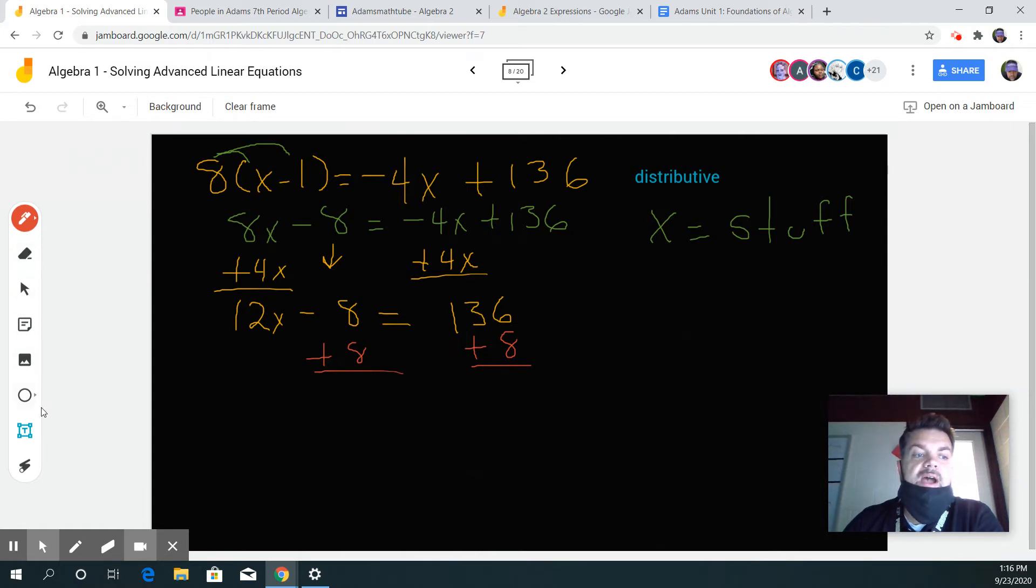By the way, what property is that I just used? Well let's start up here. What property did I use there? The addition of equality, right?